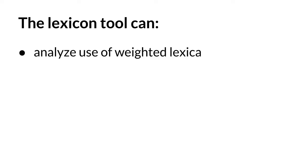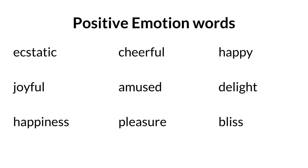For example, you may be interested in how different types of emotions are expressed in text, and you might want to know how much positive emotion is expressed. Or you might want to compare two or more documents on the relative use of positive emotion words. One way to do this is to first create a lexicon of positive emotion words, which is essentially a list or dictionary of different positive emotion words.